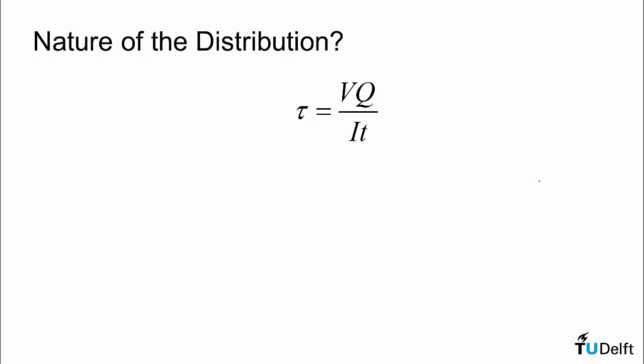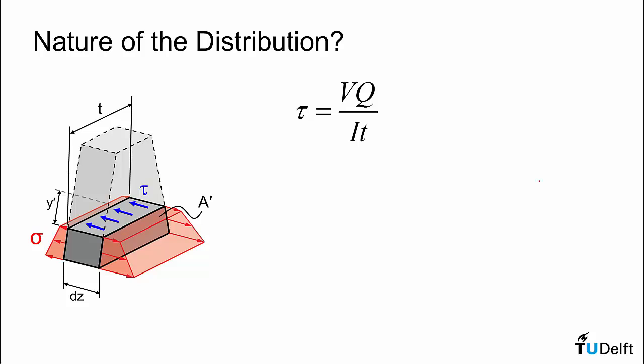So now that we've derived this formula, what can we say about the nature of its distribution? Well if we look at the section of our element again, showing a distance y prime, what we can see is this term V will be constant for the section. It is the internal shear force acting on this entire section. Similarly, I will be constant for the section. The moment of inertia of that cross section is constant. It's not a function of y prime. Now the area A prime is, and that all comes into play in Q, but V and I will be constant for the cross section. t can also vary, but for now let's just bring t over here and equate this to shear flow just to remove t from the equation. So V is constant, I is constant, so the distribution is dependent upon Q.